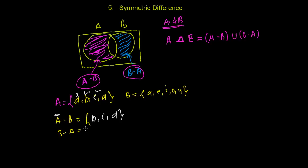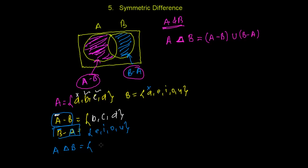Now I need to write B difference A. B difference A means elements found in B but not in A. A is in both sets. So the elements found in B but not in A are E, I, O, and U. So B difference A is {E, I, O, U}. Now A delta B is the union of these two: A difference B and B difference A, which gives {B, C, D, E, I, O, U}. This is called A delta B, or the symmetric difference between A and B.